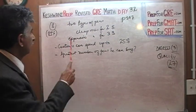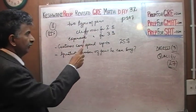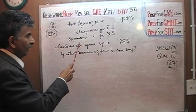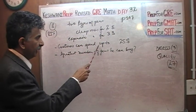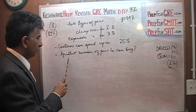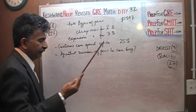Here is what is going on. We are told that we have two types of pens, cheap ones for $2, expensive ones for $3. We have a customer who can spend up to $25. The question simply is what is the greatest number of pens they can buy.